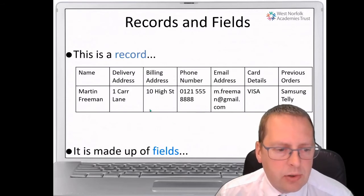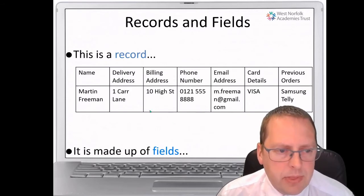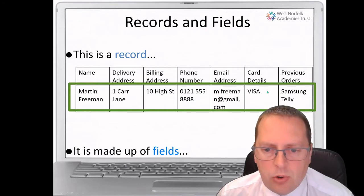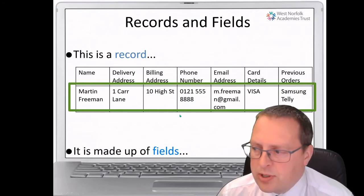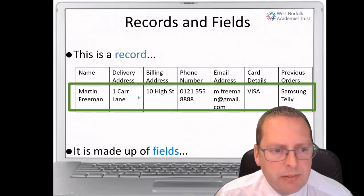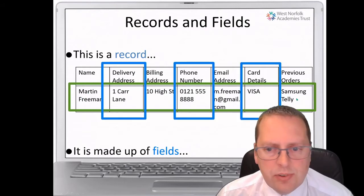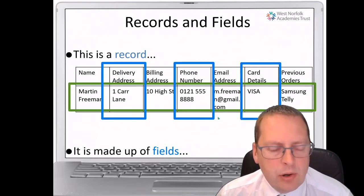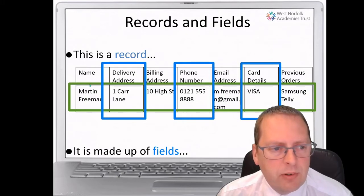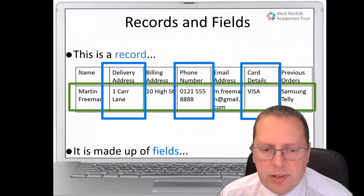Looking at this record, we've got a record here which is all of the information in the green, and it's made up of the individual fields. Each of the individual fields — previous orders, card details, email address — are all separate fields. We've got field headings at the top and then all the information in the table.